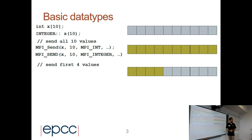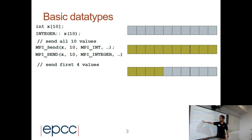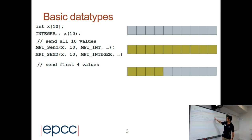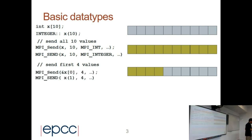For example, to send the first four elements, what should I write here? Instead of 10, I put a 4. The address is the same — it's the vector x — but I want to send only these 4 elements.